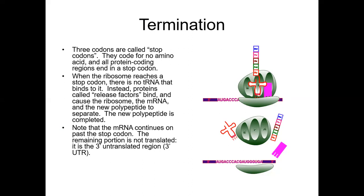Translation is terminated when there is no need for more protein synthesis. A stop codon signals the cell to stop making that protein. There are three codons that act as stop codons: UGA, UAG, and UAA.